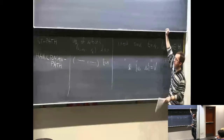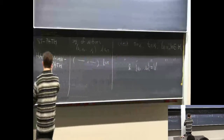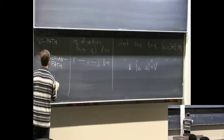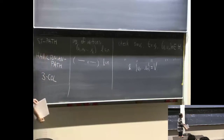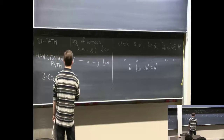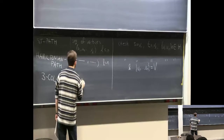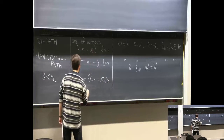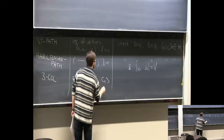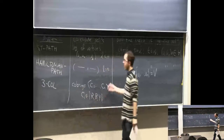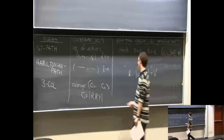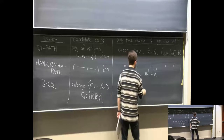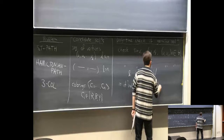How about three coloring? Given an undirected graph, candidate solutions are colorings of the vertices — C1 through Cn where the Ci values are red, blue, and yellow. Enumerating all of these is 3^n. Checking is easy: once you have a candidate coloring, check if Ci differs from Cj for all i, j that are in an edge.